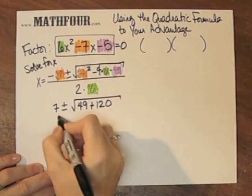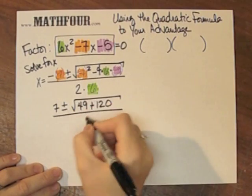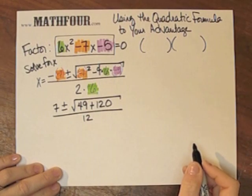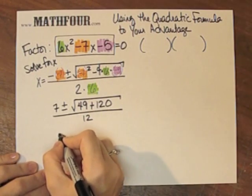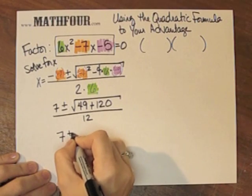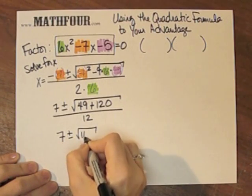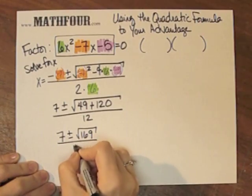Negative 4 times 6 times negative 5. This is 30 times 4 is 120. So, that's plus 120. 2 times 6 is 12. So, this is 7 plus or minus the square root of 169. How nice. Over 12.